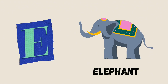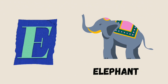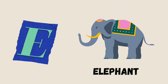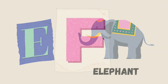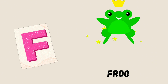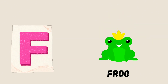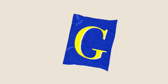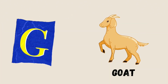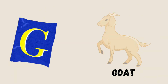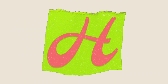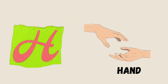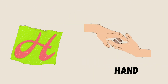E is for Elephant, E-E-Elephant. F is for Frog, F-F-Frog. G is for Goat, G-G-Goat. H is for Hand, H-H-Hand.